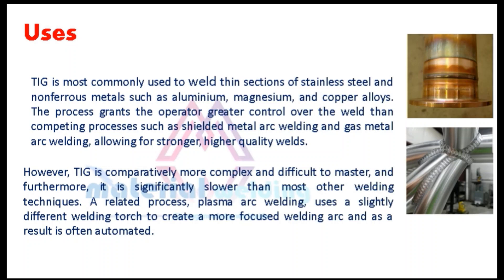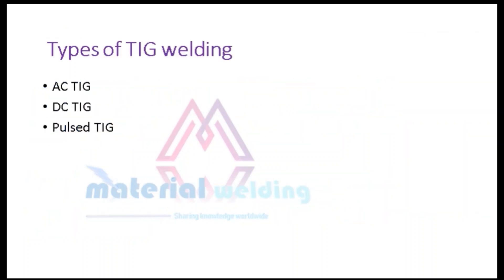A related process, plasma arc welding, uses a slightly different welding torch to create a more focused welding arc and as a result is often automated. TIG welding is classified into three types: 1. AC TIG, 2. DC TIG, and 3. Pulsed TIG.